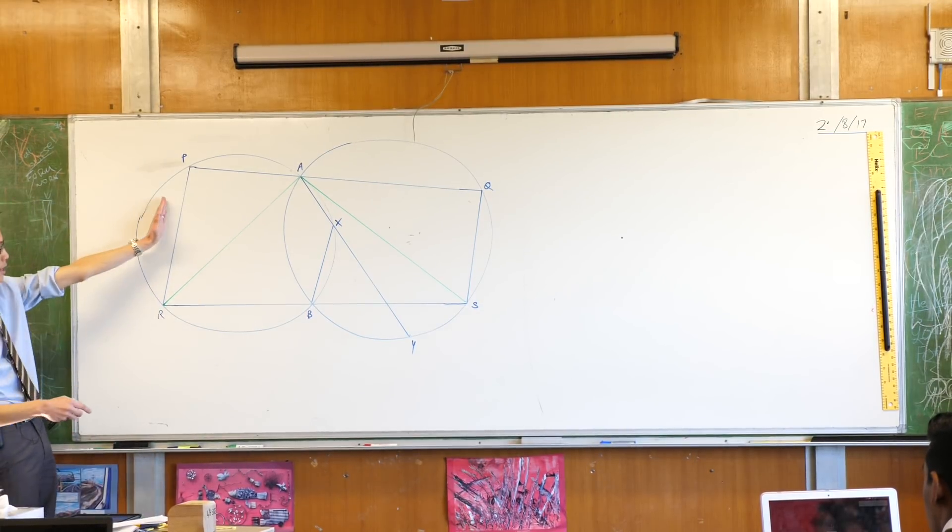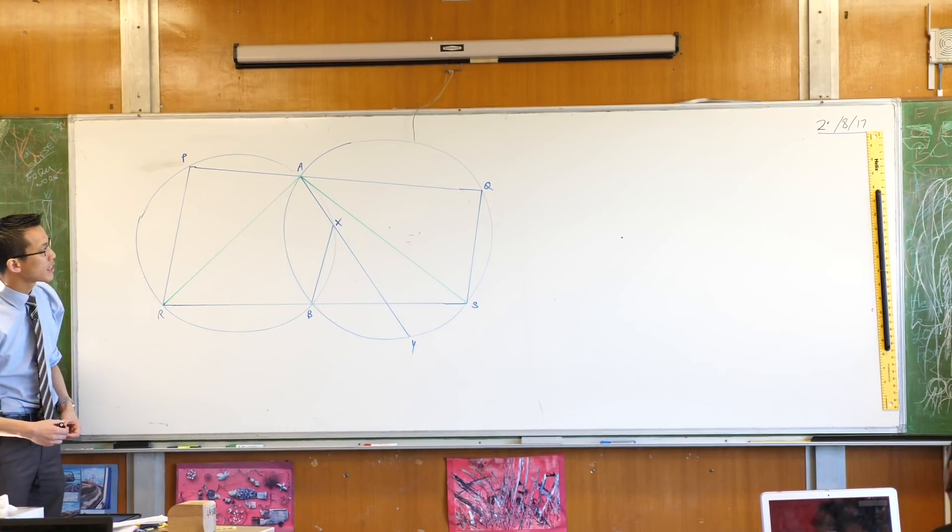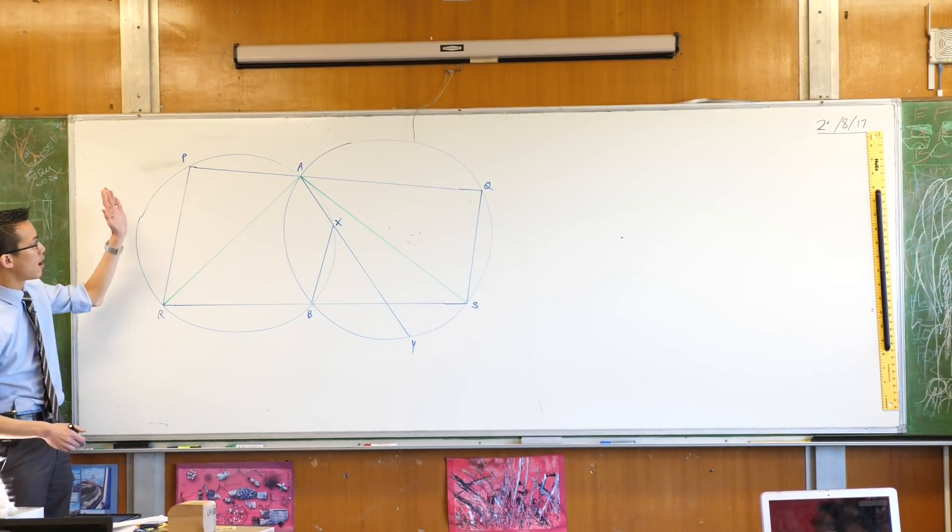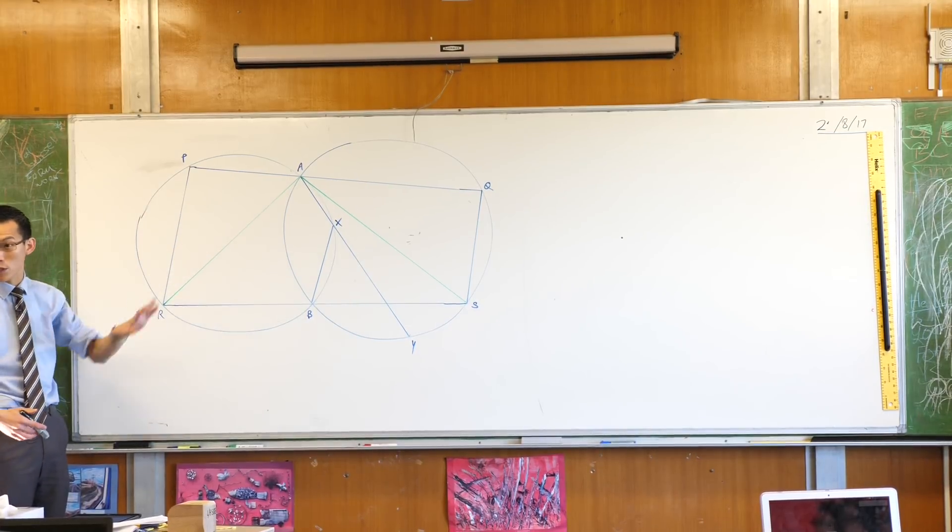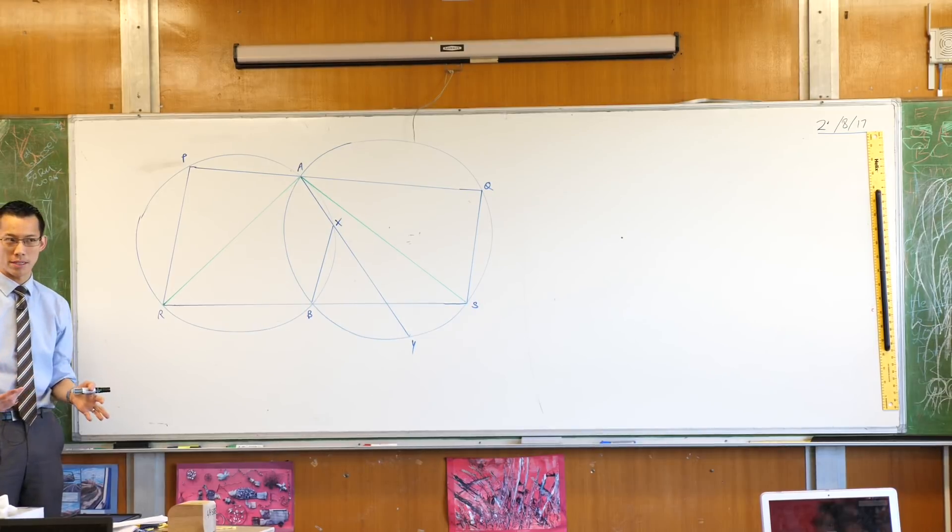Prove that PR is parallel to QS. So where are PR and QS? Here and here. Now PR and QS, you might notice, are in different circles. So I'm going to need to relate them in some way that's in common.